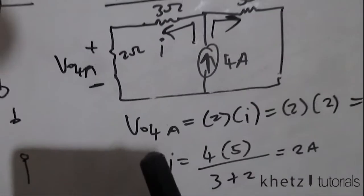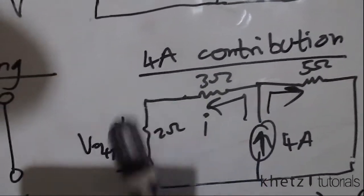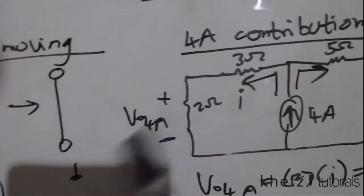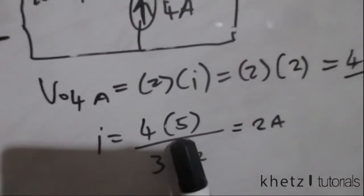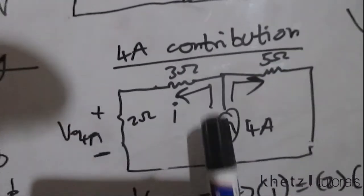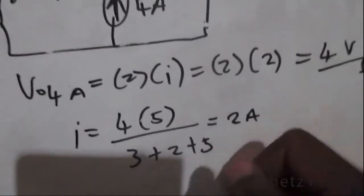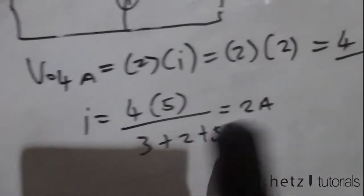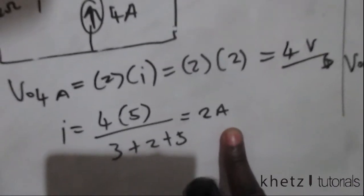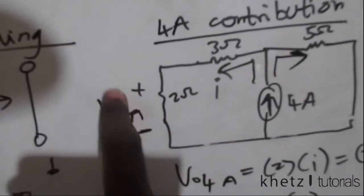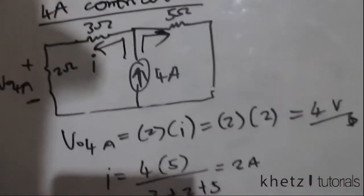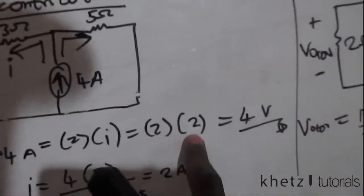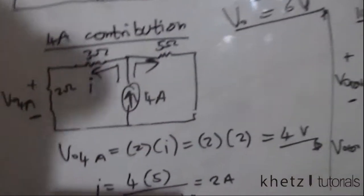For the current division, I label the current going through the 2-ohm side. We find: I equals 4 multiplied by 5, divided by (3 plus 2 plus 5), which is 20 divided by 10 = 2 amperes. Since that current I flows into the positive terminal of Vo, we get Vo = I × 2 ohms = 2 × 2 = 4 volts. That is the contribution of the 4 amperes.